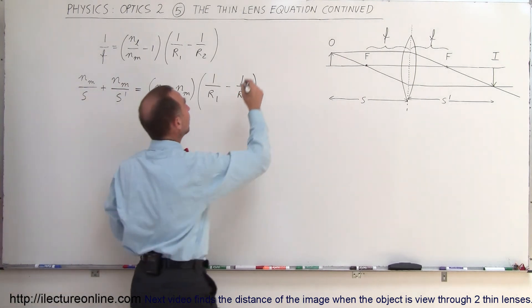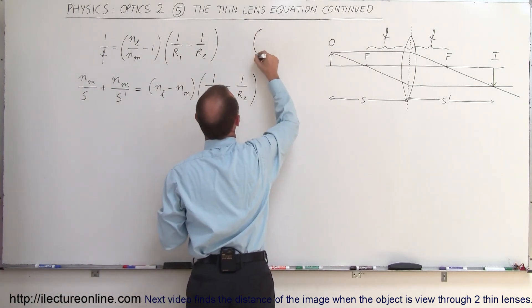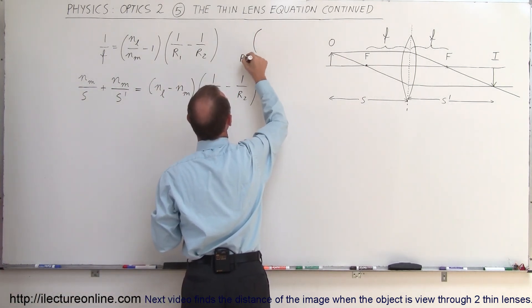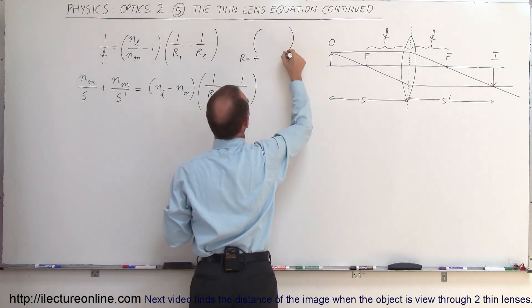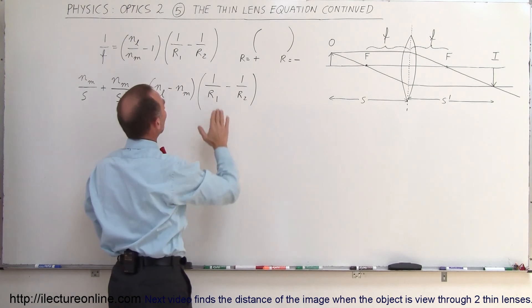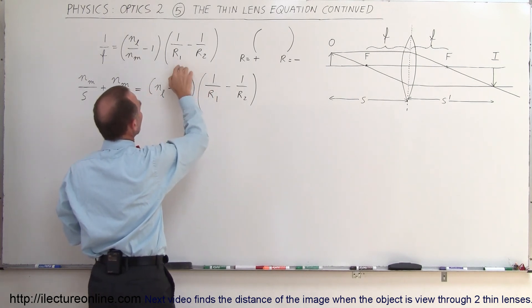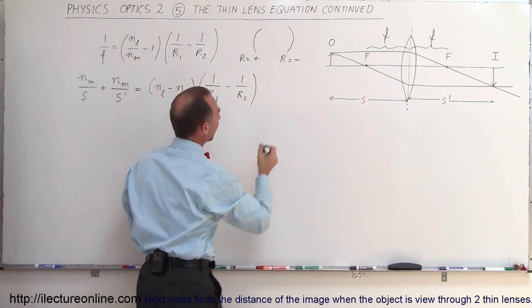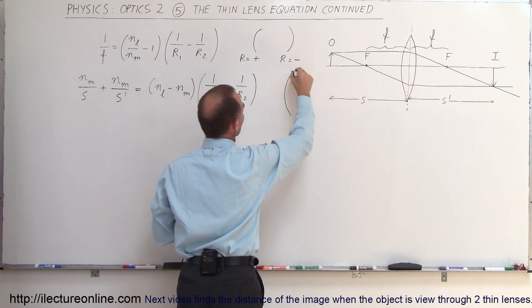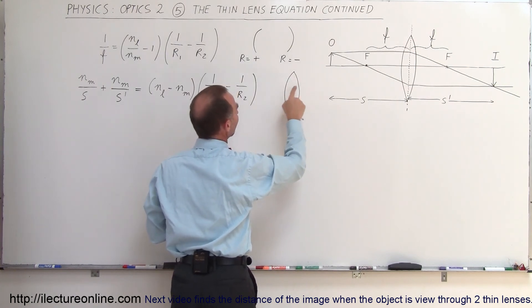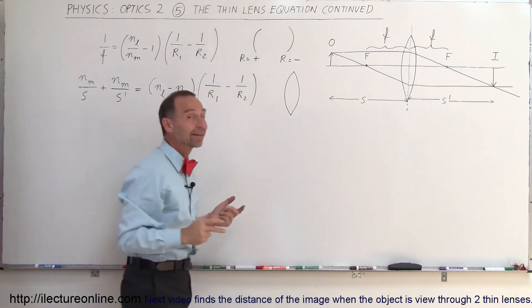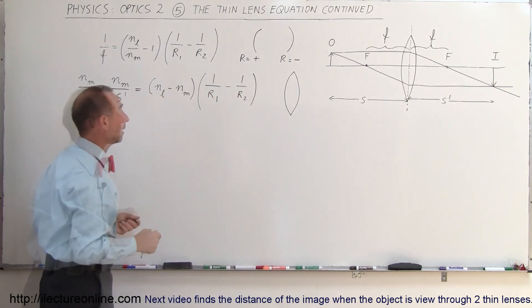Remember the convention on the radii: if it's bent to the left, the radius is positive, and if it's bent to the right, the radius is negative. In this case, you can see that if the lens looks like this, it would have a positive curvature on the front side and a negative curvature on the back side, making it a converging lens.